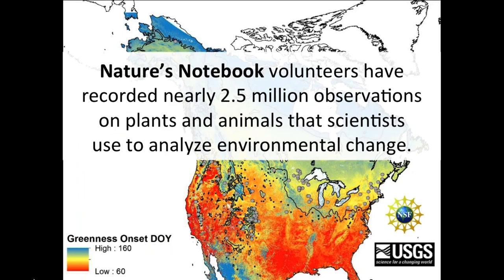I'll give one example: the US Phenology Network, supported by the National Science Foundation and the US Geological Survey. They have a project called Nature's Notebook that has volunteers around the country contributing millions of observations on plants and animals that scientists use to analyze environmental change. This map was looking at leaf emergence of two species of poplar — that data is being used to look at the role of genes and environment in controlling poplar phenology. The citizen science data improved models for the onset of spring, and they found that in the southeast, spring was coming four to five weeks early, with implications for freezing damage to fruit crops — real economic implications. There were 40 peer-reviewed publications.